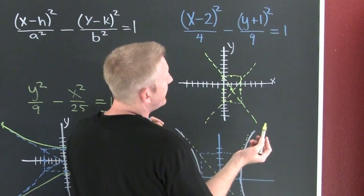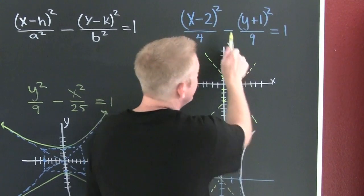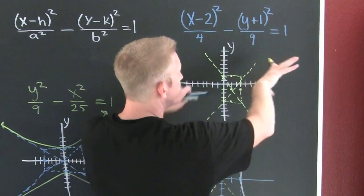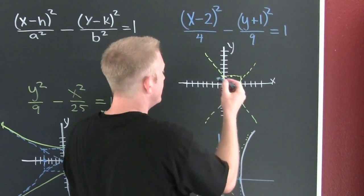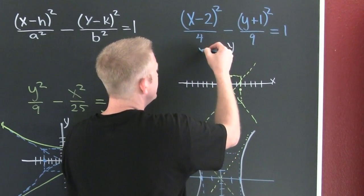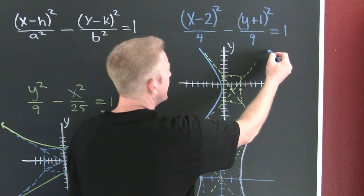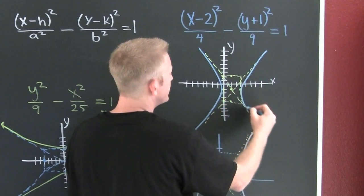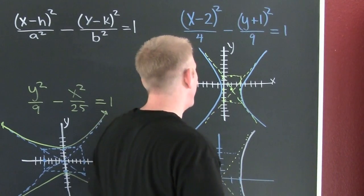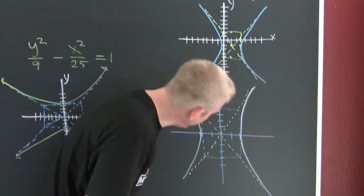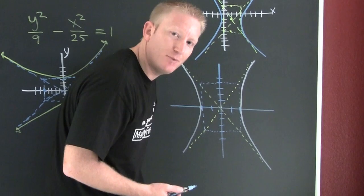Now we have to identify which one has the minus sign. The Y has the minus sign, so it opens away from Y.